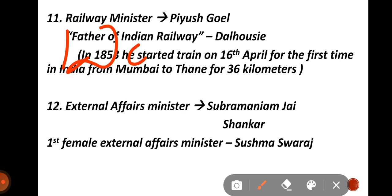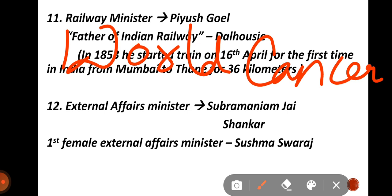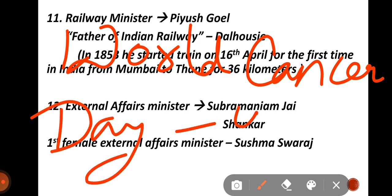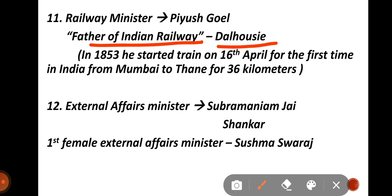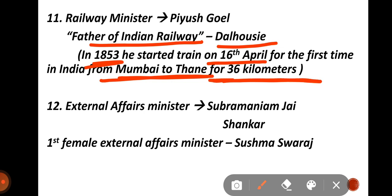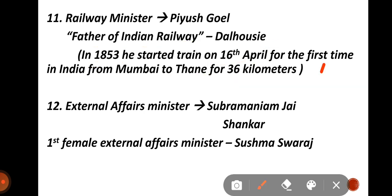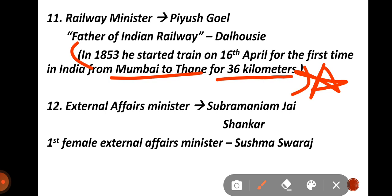World Cancer Day is also an important question. The Father of Indian Railways is Dalhousie. On 16th April 1853, the first train in India ran from Mumbai to Thane — a distance of 36 km. This is very important: Mumbai to Thane, 36 km, on 16th April 1853.